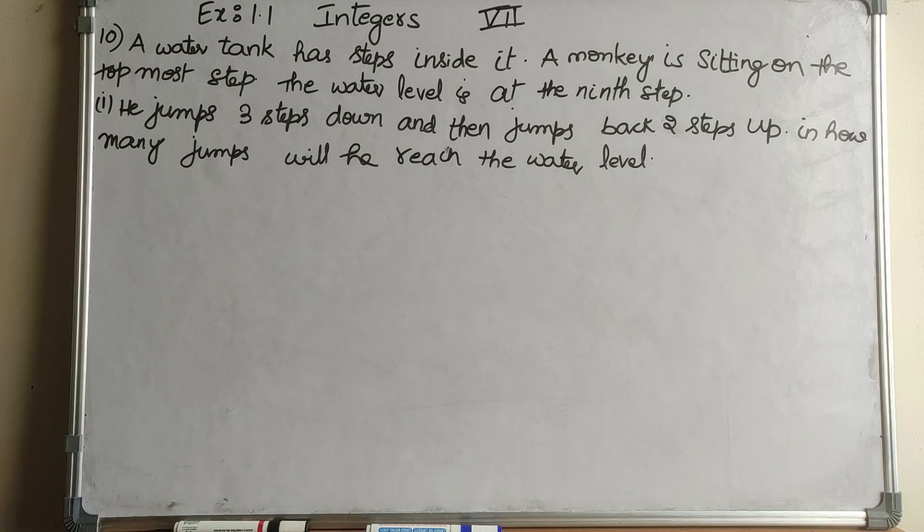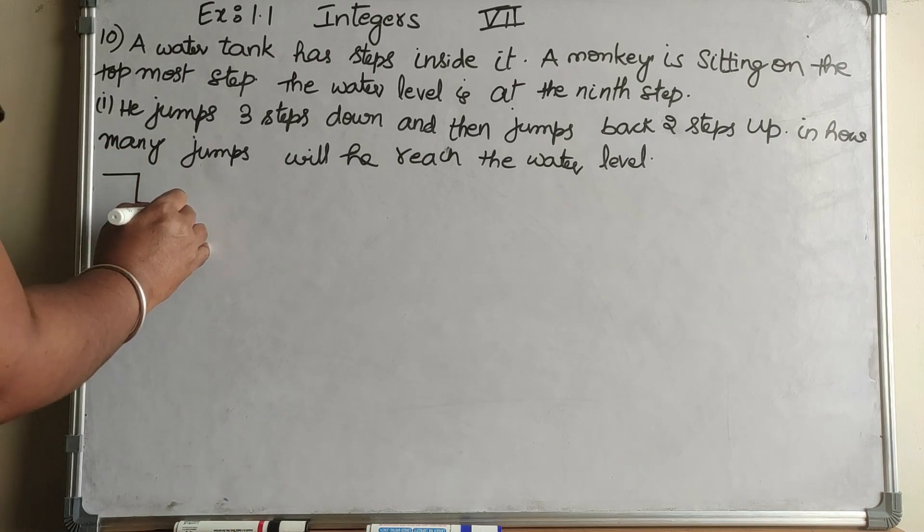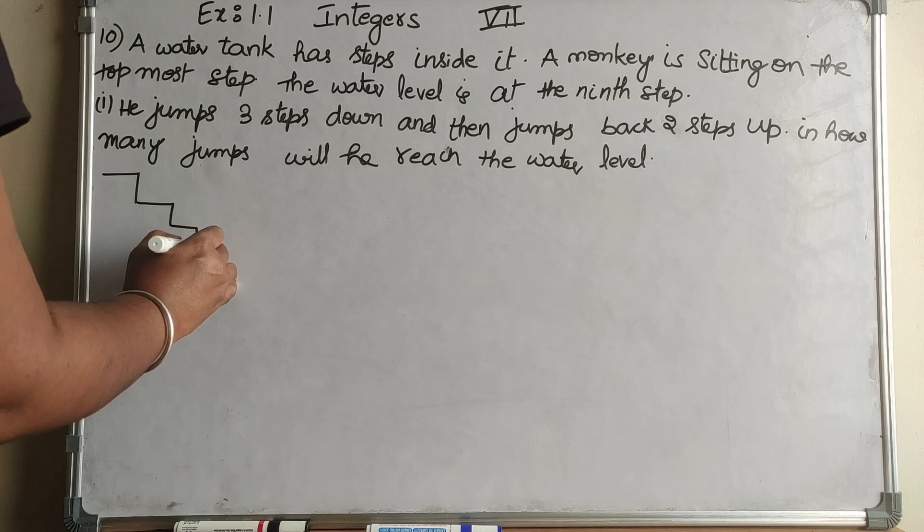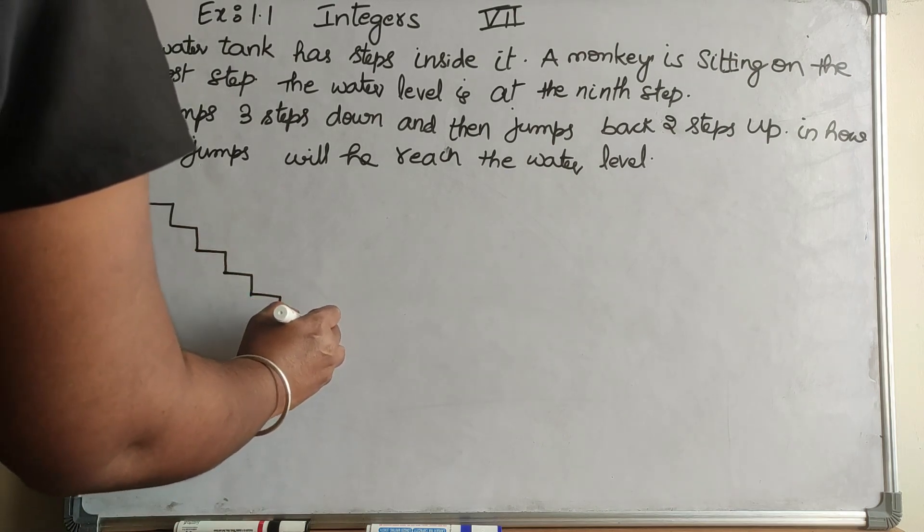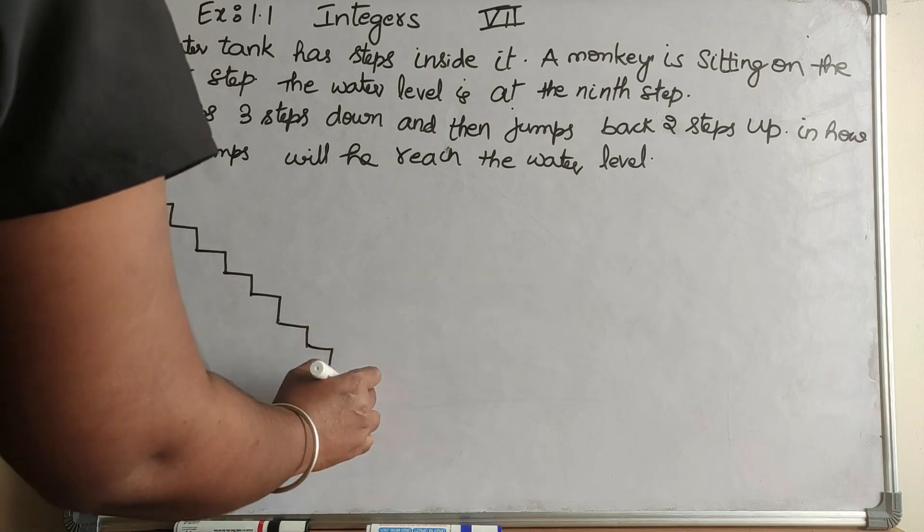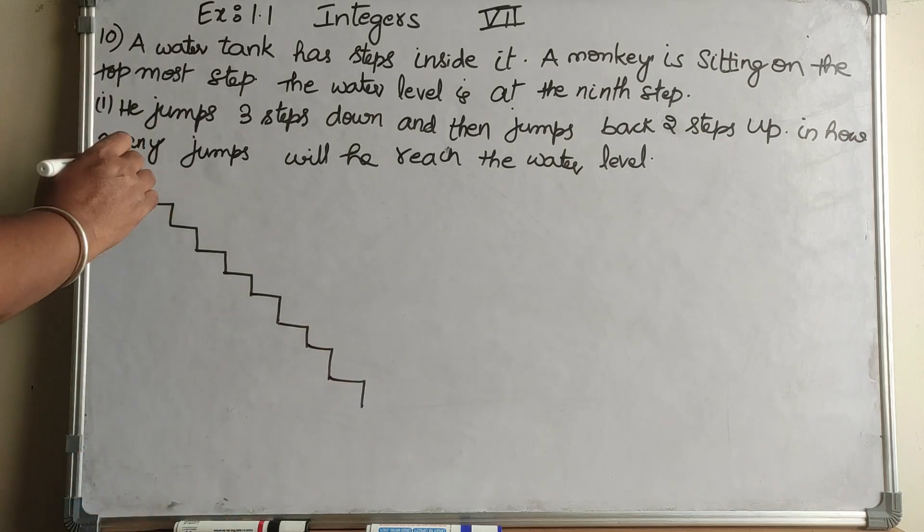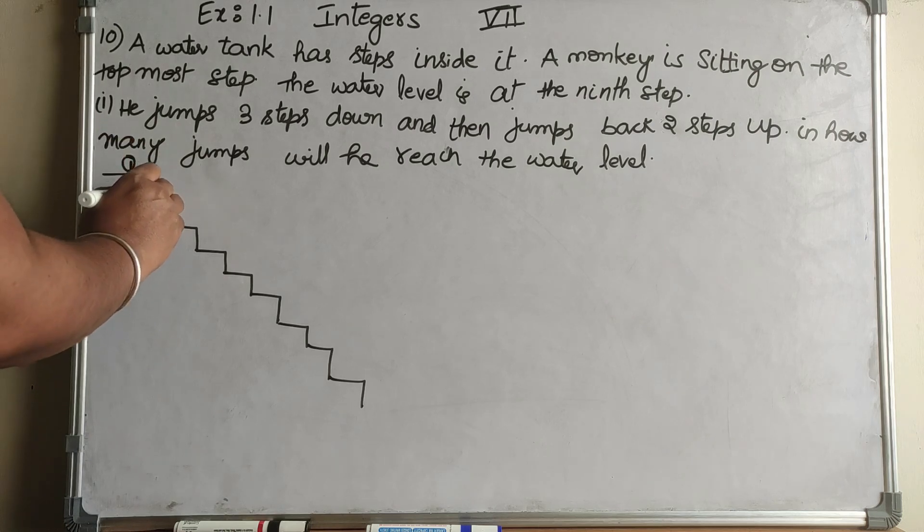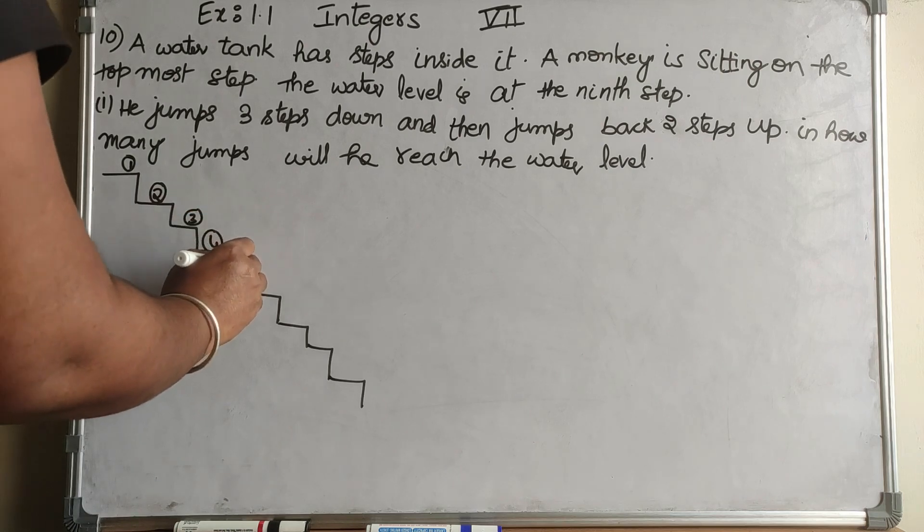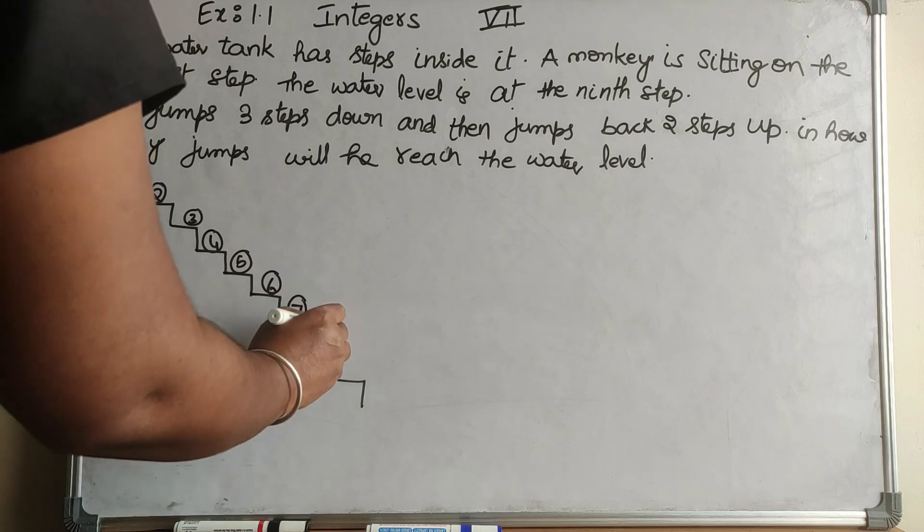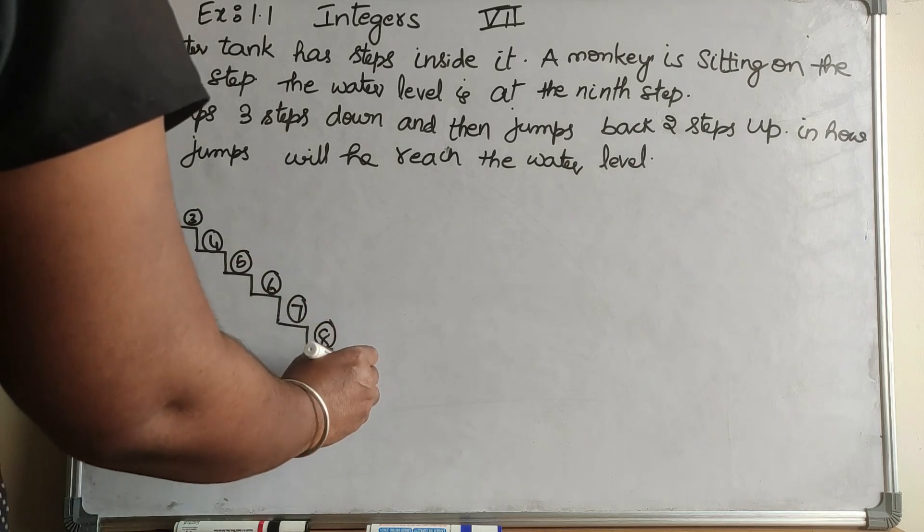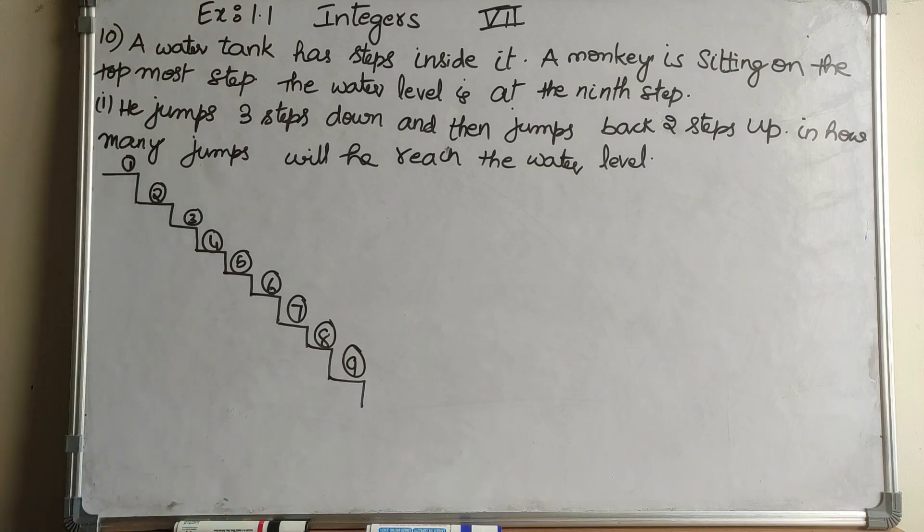So, if the steps are like this: 1, 2, 3, 4, 5, 6, 7, 8, 9. The 9th step has the water level, and the monkey is sitting on the first step. It should reach the 9th step.